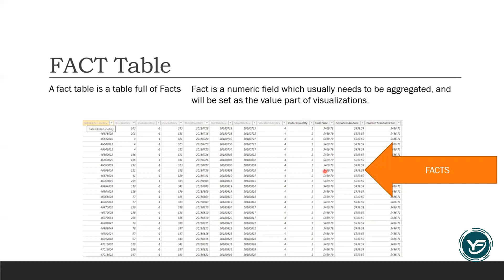These values are normally called facts. You can imagine a fact as a sum of a particular column, maximum, minimum, or average — these are the aggregations that we normally utilize in order to showcase aggregations as facts.